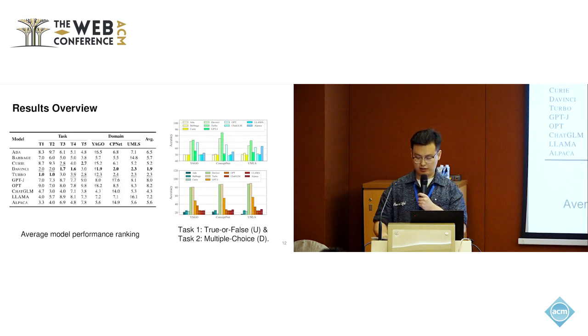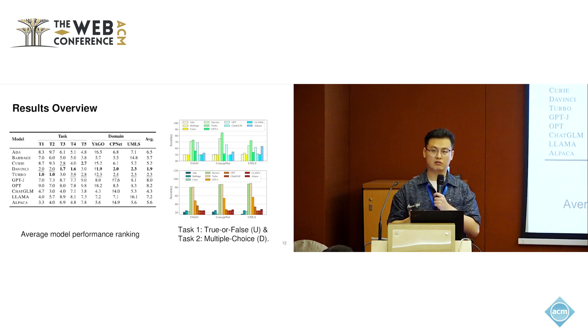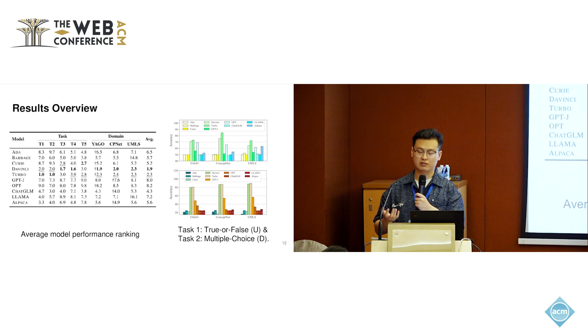Here is the results overview. On the left is the average model performance ranking, which allows us to directly compare the performance of different models across different tasks or different domains. It's evident from this table that, at that time, GPT-3 Da Vinci and GPT-3.5 Turbo had taken a significant lead compared to other models.